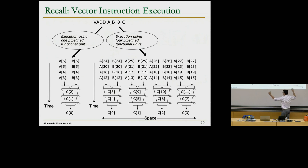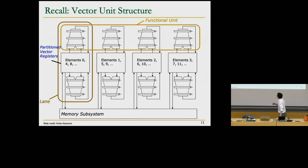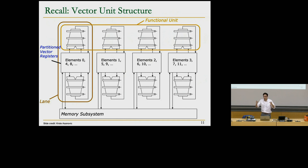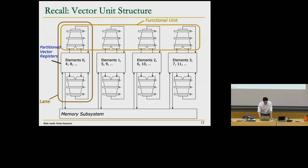We also described vector lanes — each column is a lane, which can contain one or more functional units. Each lane has access to a certain number of registers. The overall structure is like a large register file, and every time we execute a program we distribute registers among the lanes so that different vector elements are placed in the corresponding lane registers.